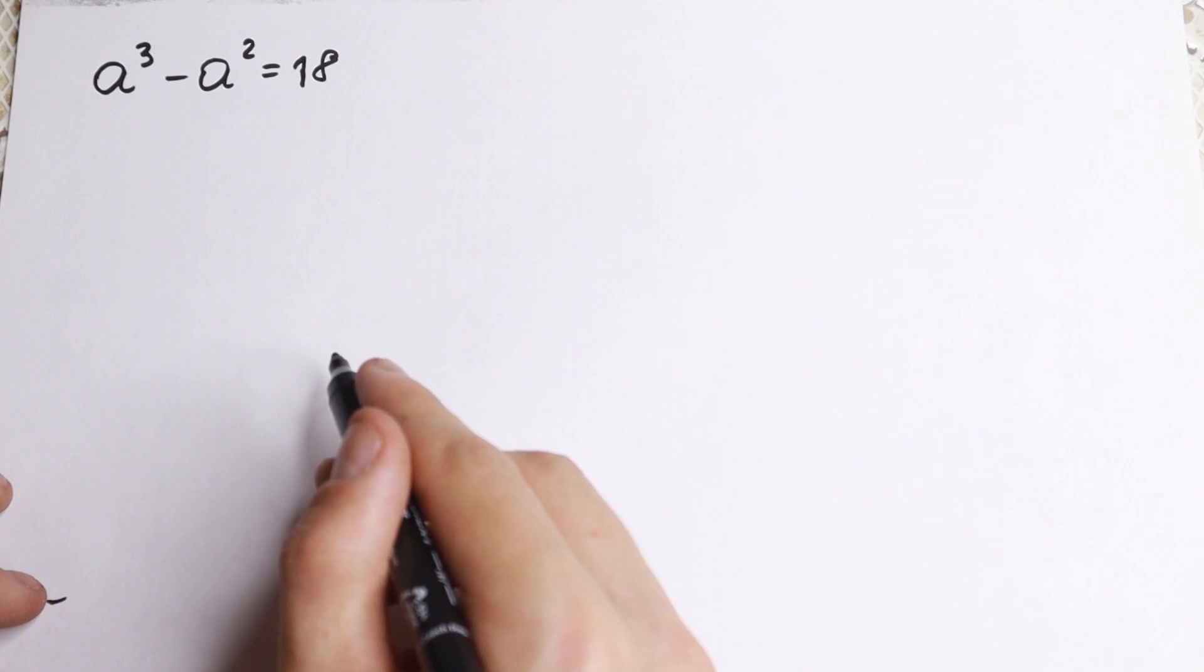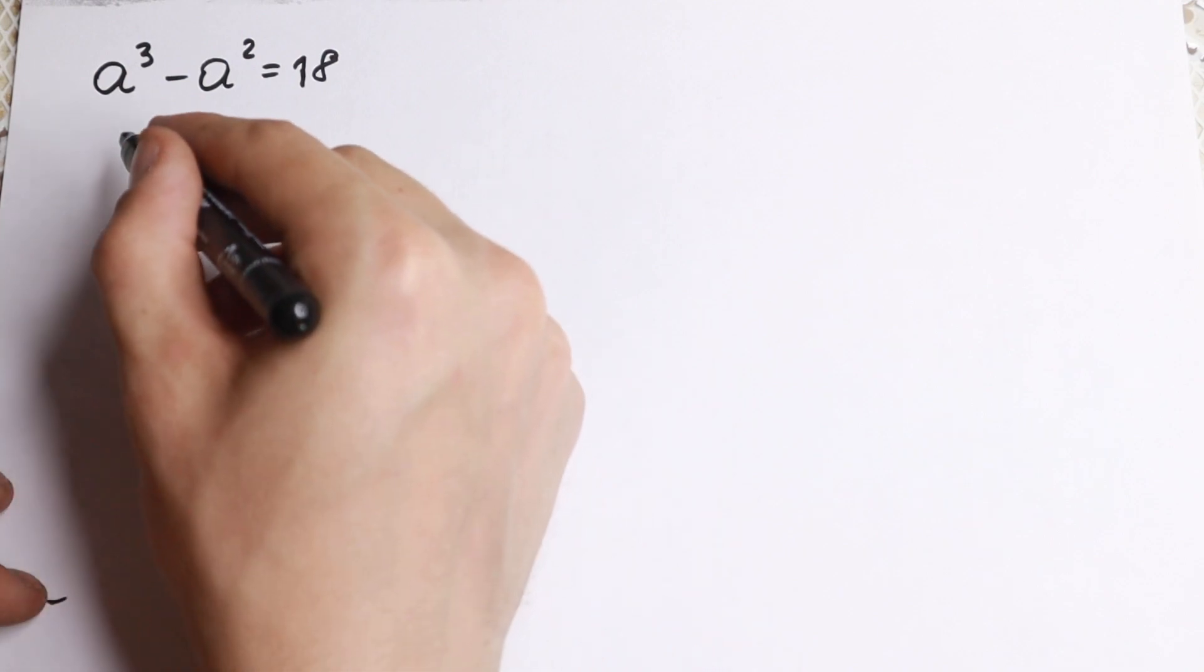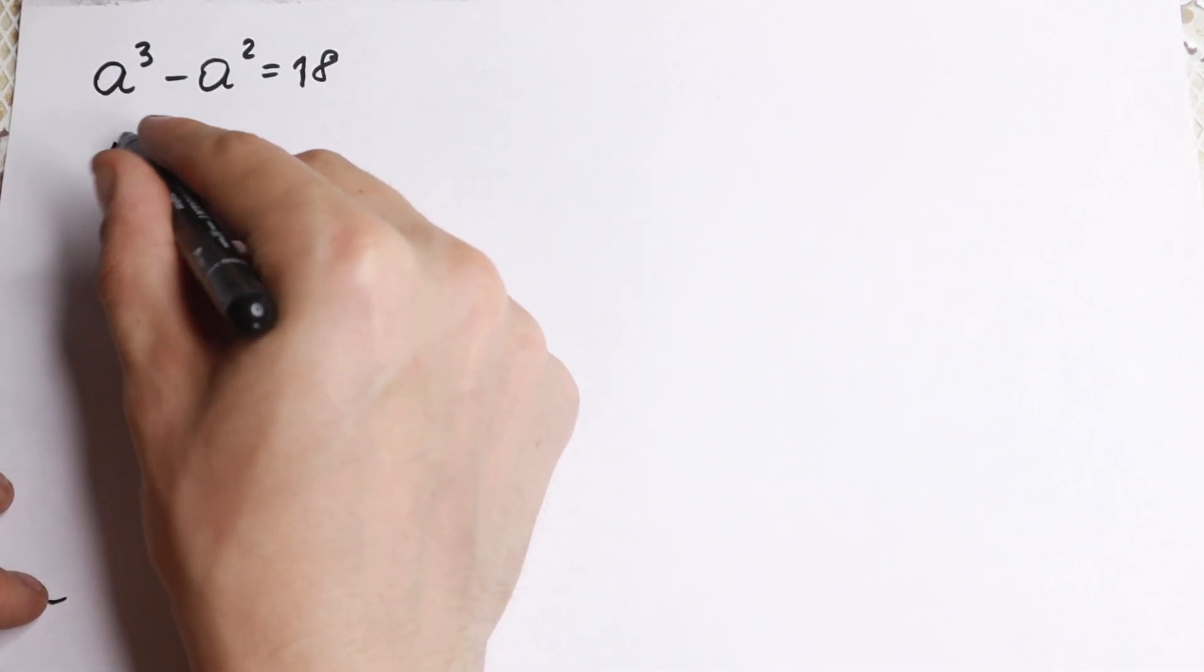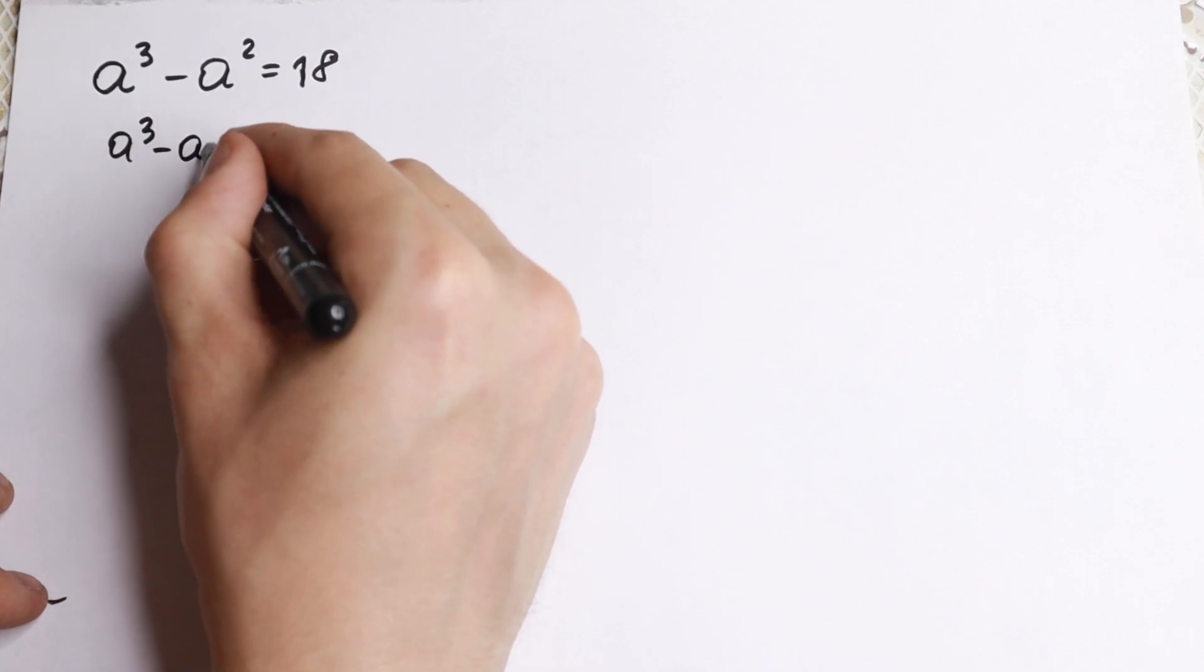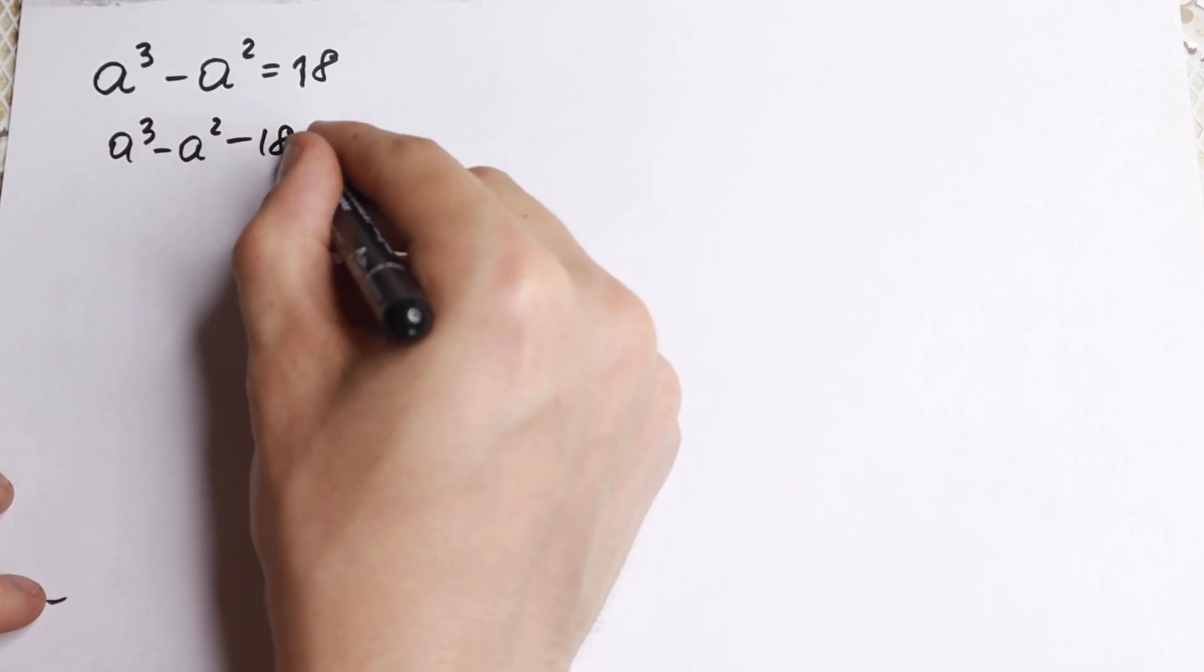How can you find it? Of course, there are a lot of methods. If we bring this 18 on the left, we will have a³ - a² - 18 = 0.